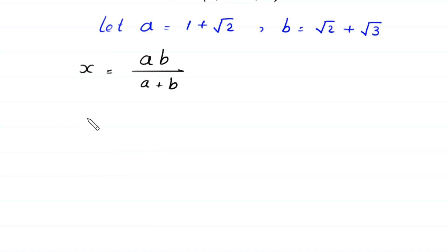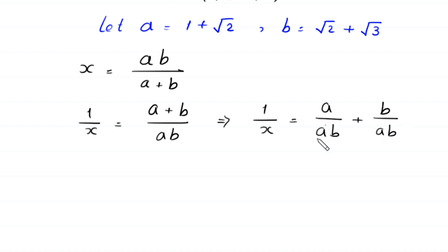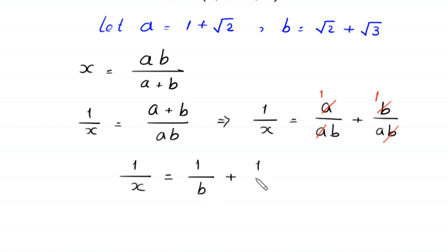Now, if we take a reciprocal on both sides, then 1 over x is equal to a plus b divided by a times b. This implies that 1 over x equals a over ab plus b over ab. Now this a cancels with this a leaving 1, and this b cancels with this b leaving 1. So this equation becomes 1 over x equals 1 over b plus 1 over a.